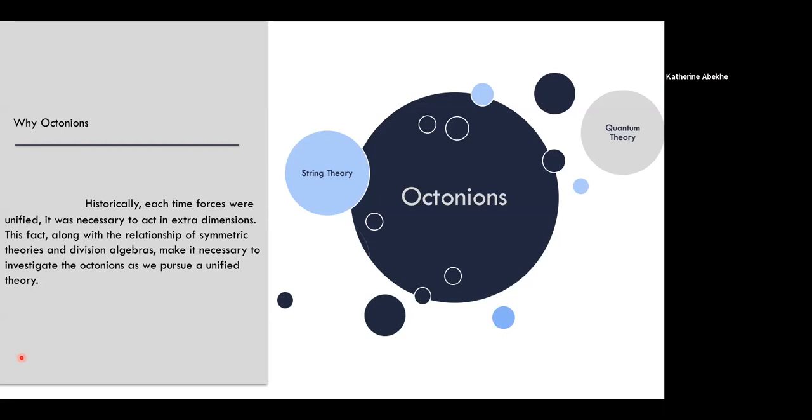There have been experiments conducted to show that string theory physically works. And those experiments involve proving that we do actually have nine spatial dimensions. But so far, we haven't been able to prove that those extra dimensions do exist.